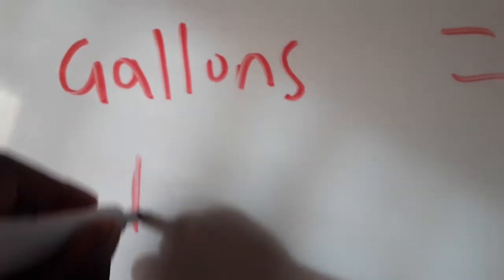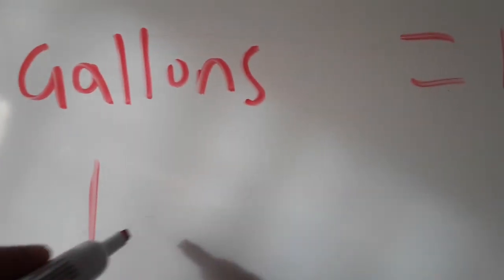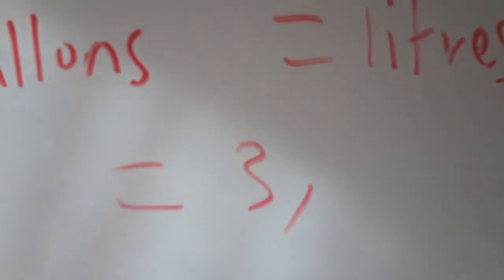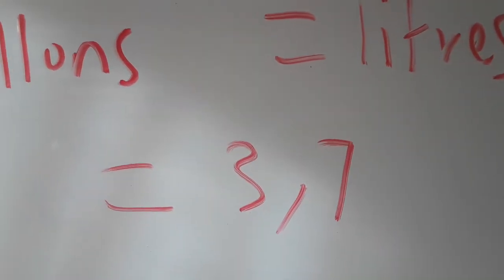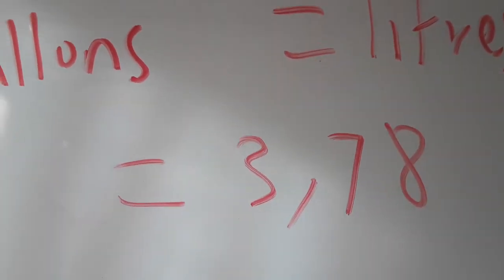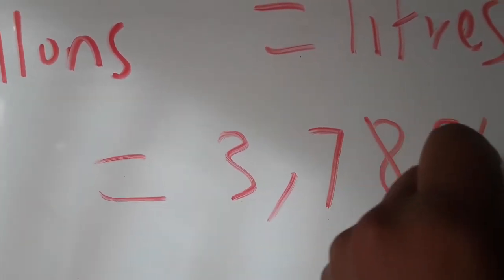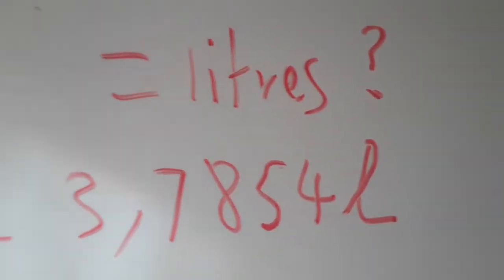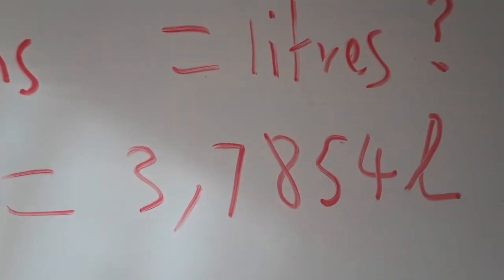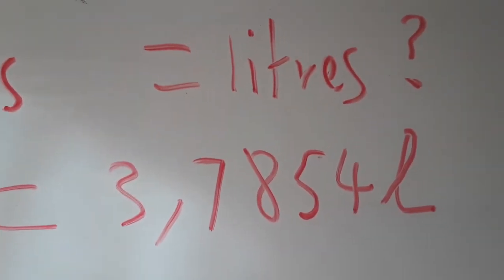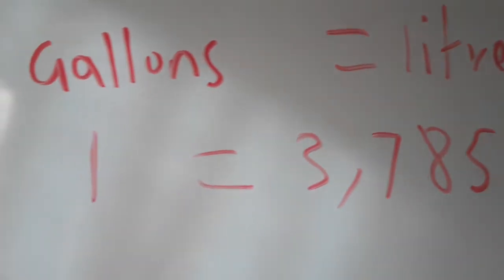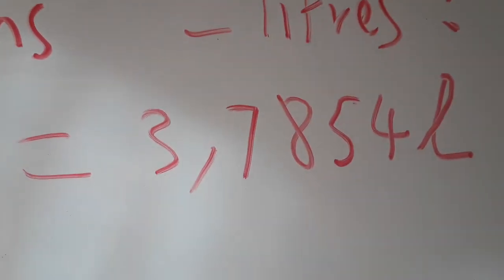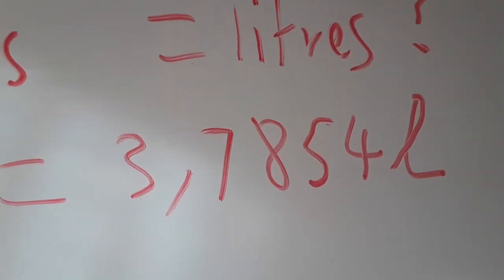So one gallon is equal to 3.7854 liters. So if you want to convert two gallons into liters, you'll say two times 3.7854 liters.